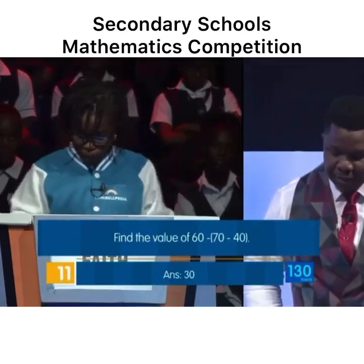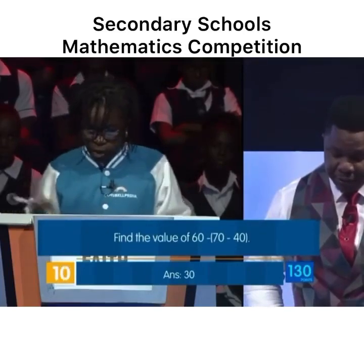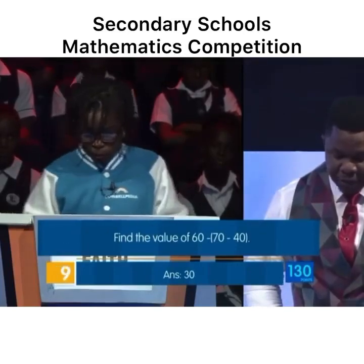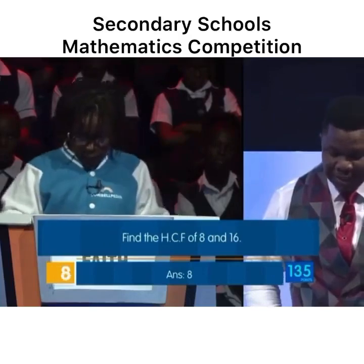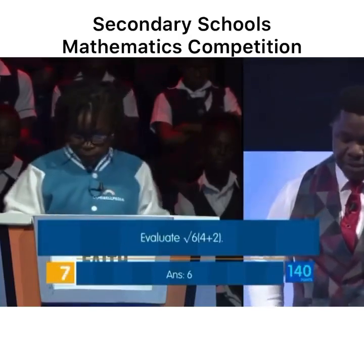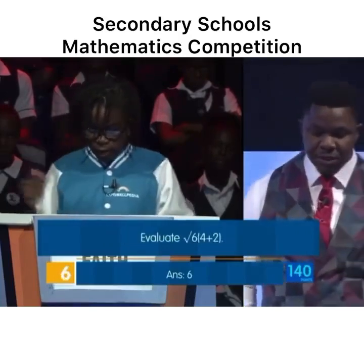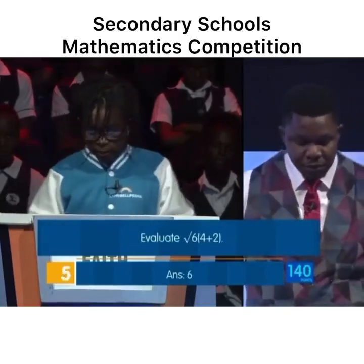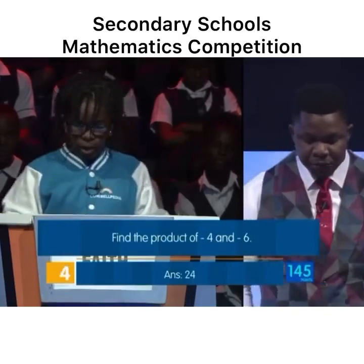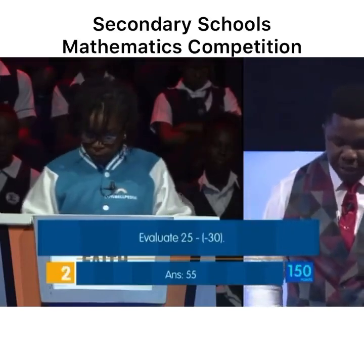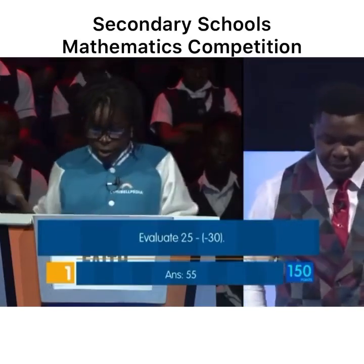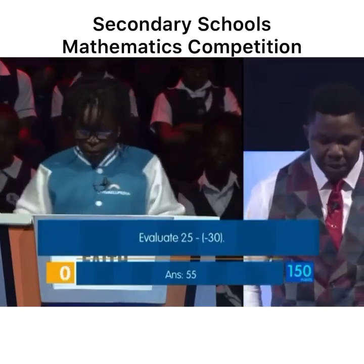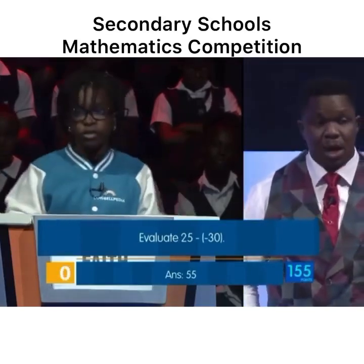Find the value of 60 minus 70 minus 40. Correct. Find 1 eighth of 8. 8. Correct. Evaluate the square root of 6 bracket 4 plus 2. Correct. Find the product of minus 4 and minus 6. 24. Correct. Evaluate 25 minus minus 30. 55. Correct.